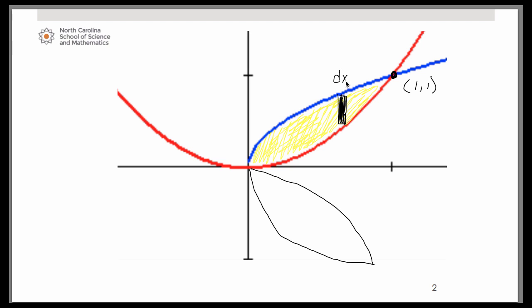What makes it a washer method problem are two major characteristics. That representative rectangle is perpendicular to your axis of revolution, which in this case we were told was the x-axis itself. And it also is not touching it. That is in contrast to the disk method in which the representative rectangle was touching the axis of revolution.